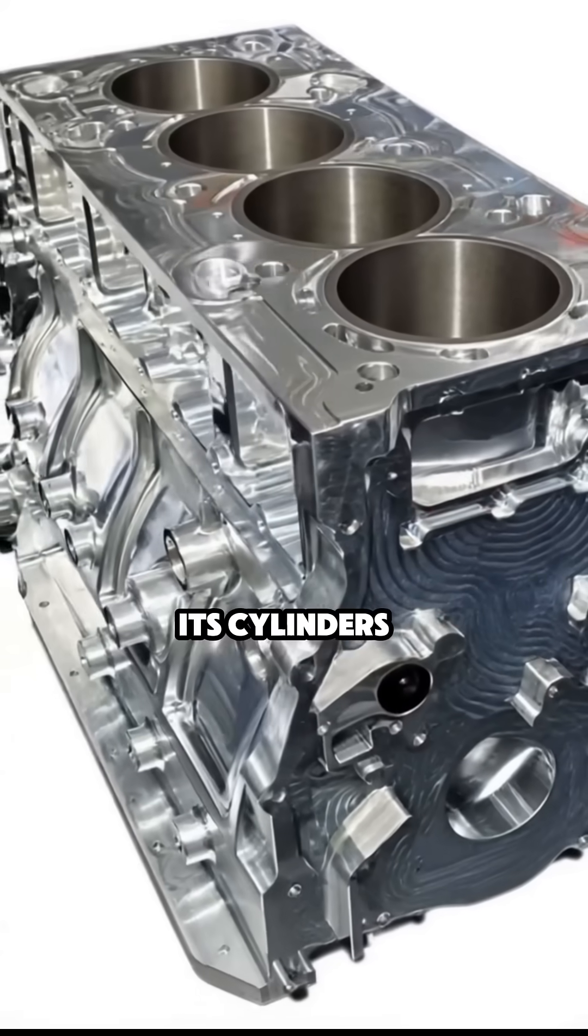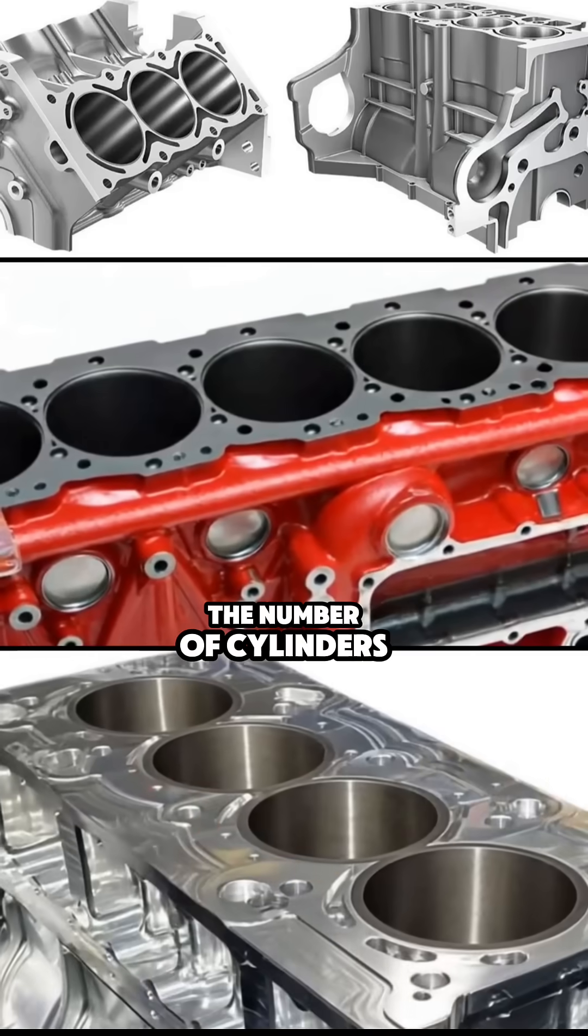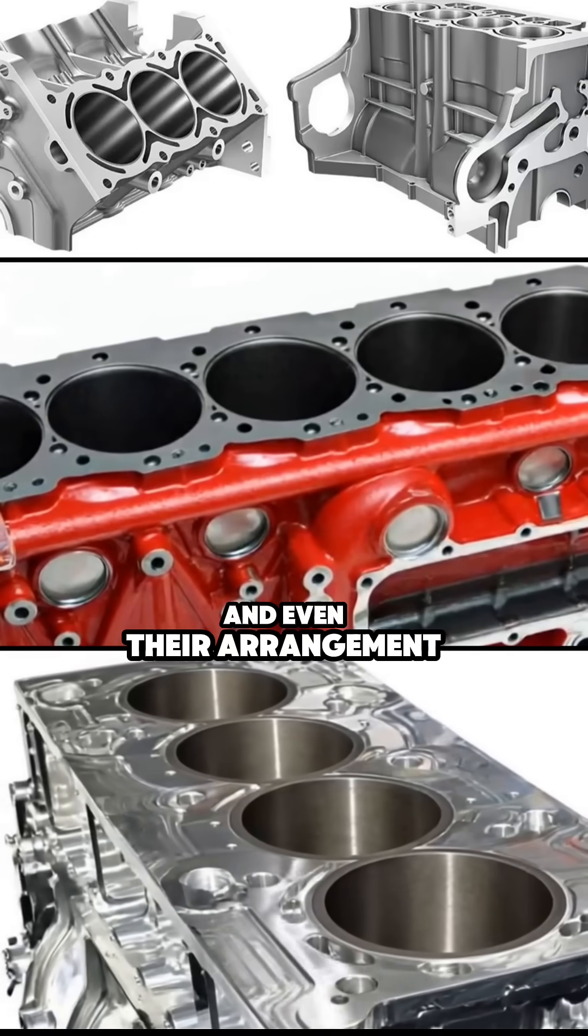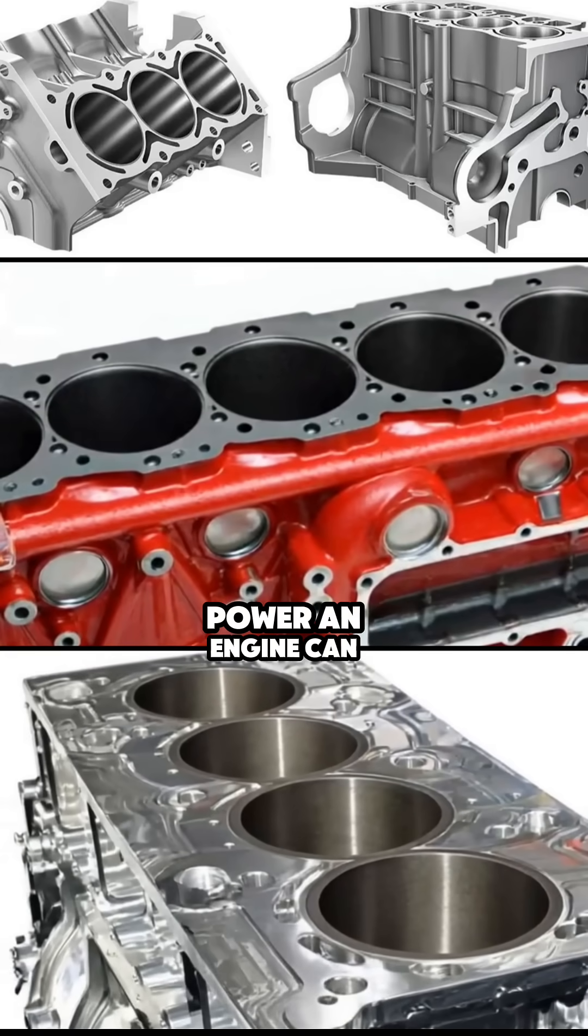At the core sits the engine block and its cylinders where combustion takes place. The number of cylinders, their size, and even their arrangement all play a big role in how much power an engine can produce.